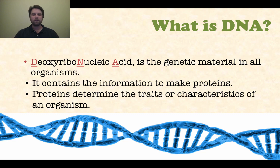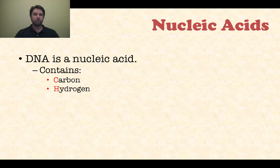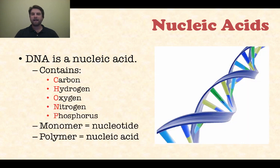It contains all the information that's needed to make proteins, and proteins are actually what determine traits and characteristics of any given organism. Nucleic acids contain carbon, hydrogen, oxygen, nitrogen, and phosphorus. The monomer of a nucleic acid is called a nucleotide, and the polymer is the nucleic acid itself.